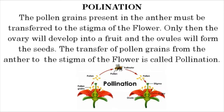Pollination. The pollen grains present in the anther must be transferred to the stigma of the flower. Only then will the ovary develop into a fruit and the ovules form the seeds. The transfer of pollen grains from the anther to the stigma of the flower is called pollination.